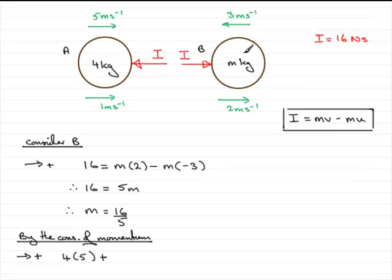Add the momentum, the initial momentum of b. So we've got m for the mass times the initial velocity. Now we've got 3 acting in the negative sense. So it's going to be minus 3.